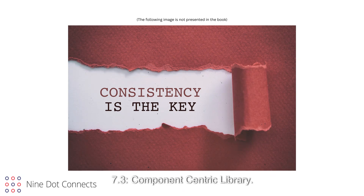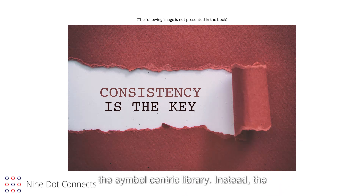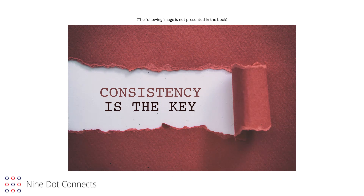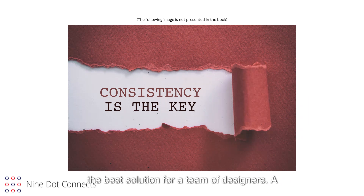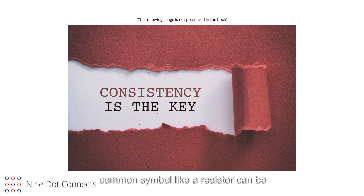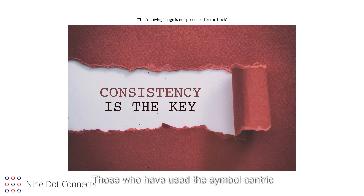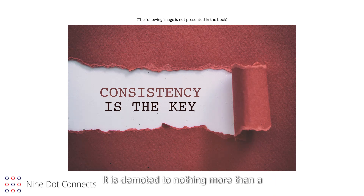Section 7.3: Component-Centric Library. A component-centric library relies on a file or database to define the component, but does not embed the symbol graphic like the symbol-centric library. Instead, the component contains the parametric information and links to the symbol and footprint models. It is common for those new to an EDA tool to start with a symbol-centric library, as it is the easiest to use and learn. However, symbol-centric libraries are not the best solution for a team of designers, since a common symbol like a resistor can be represented with various orientations and styles, causing the library to lack consistency. Those who transition to the component-centric approach may struggle, because the symbol no longer defines the component — it is demoted to nothing more than a graphic, handled similarly to a footprint model.